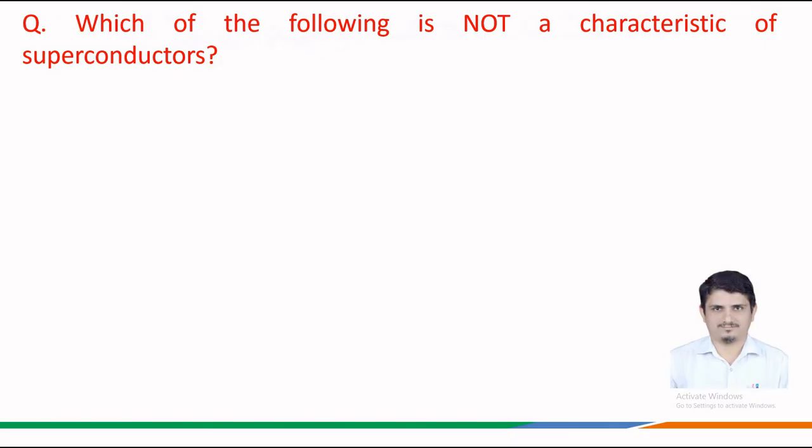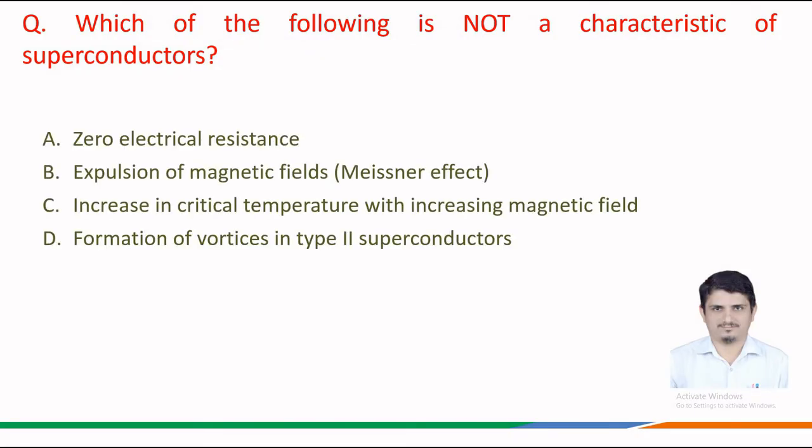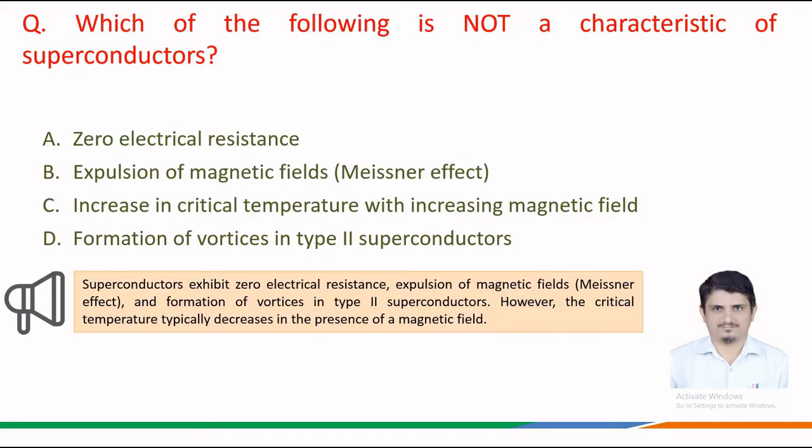Next question: which of the following is not a characteristic of superconductors? The given options are: option a, zero electrical resistance; option b, expulsion of magnetic fields — Meissner effect; option c, increase in critical temperature with increasing magnetic field; and option d, formation of vortices in type 2 superconductors.